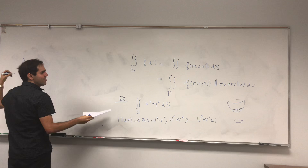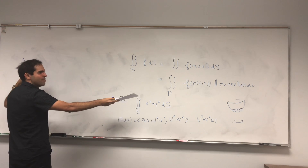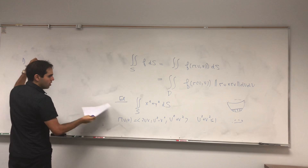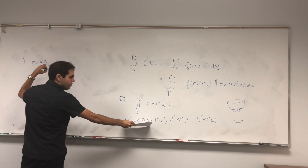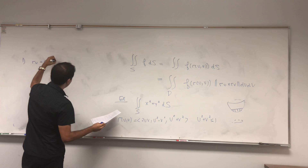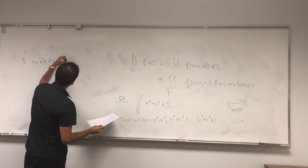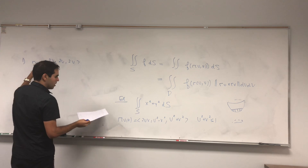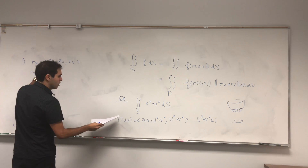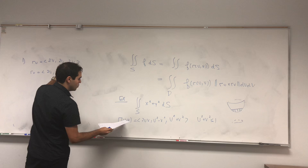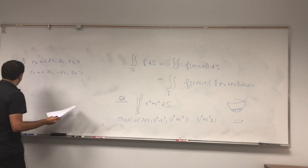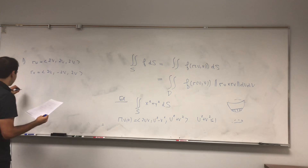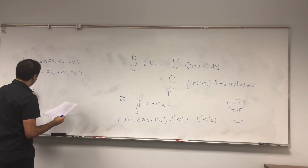Well, let's just use this definition, step by step. First, let's calculate R_U — that is the derivative of everything with respect to U. So R_U = (2V, 2U, 2U). And R_V = (2U, −2V, 2V).